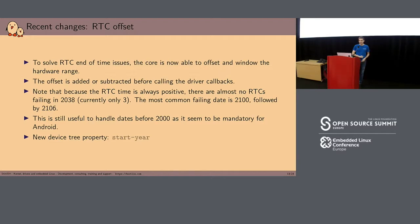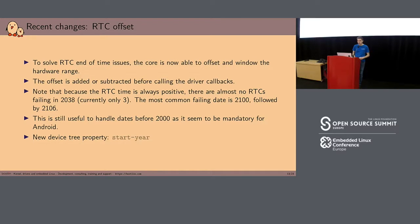There is also the RTC offset — in retrospect I think I should have named it differently. We have an issue for the RTC end of time: when an RTC can't continue past, say, 2106, we want to add or subtract an offset before calling the driver callback. The core can only do that if it knows the available range of the RTC. Drivers supporting this are the ones setting range_min and range_max. Note that we don't have the 2038 issue in the RTC subsystem, because we never use a signed time_t — it's always unsigned.